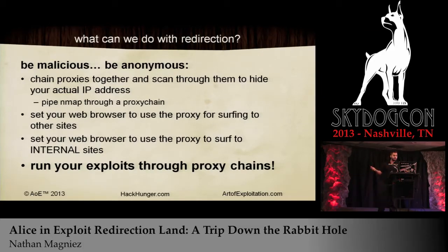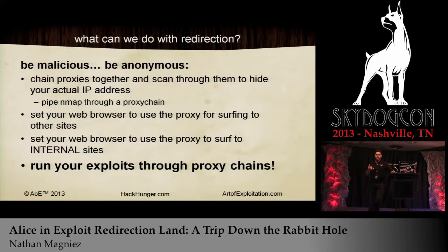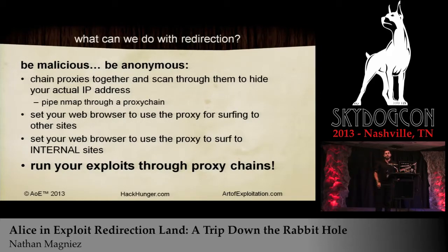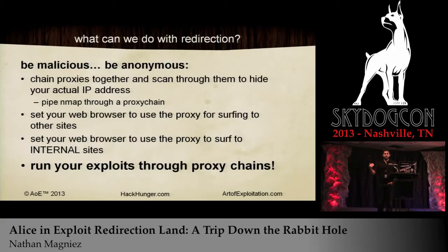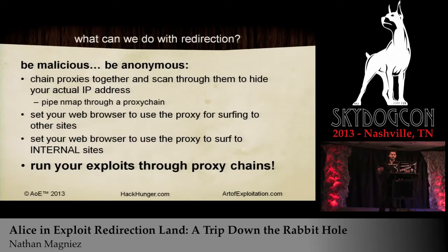We can chain proxies together to send our packets through and hide our attack machine. We can pipe anything through what's known as a proxy chain — we'll talk about that later. We can set our web browser to do that too; you can use Tor, the simplest one. We can also use it to surf intranet sites, and we can run our exploits through them via proxy chains — which is actually what we're here to talk about.